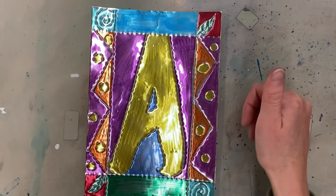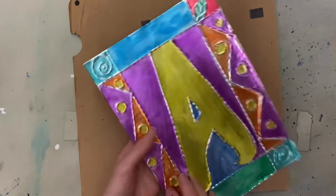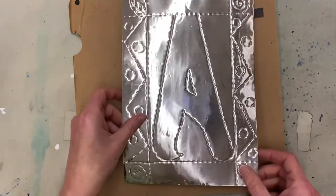All right you can see my design is all colored with permanent markers. So now second to last step. Yes I know there are a lot of steps to this one. Take your metal and now that it's colored we're going to do some tooling.